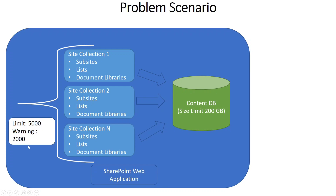At 2,000 site collections, the system will warn you that your site collections per content database are approaching the threshold. Ideally, if your site collections have very minimal data — no documents, just some informational sites — that scenario is fine. But if site collection one contains 50 GB, site collection two contains 500 GB, and site collection N contains 200 GB, the overall data size on that content database will eventually cause all site responses to become slow, and users will start complaining about the application hanging.